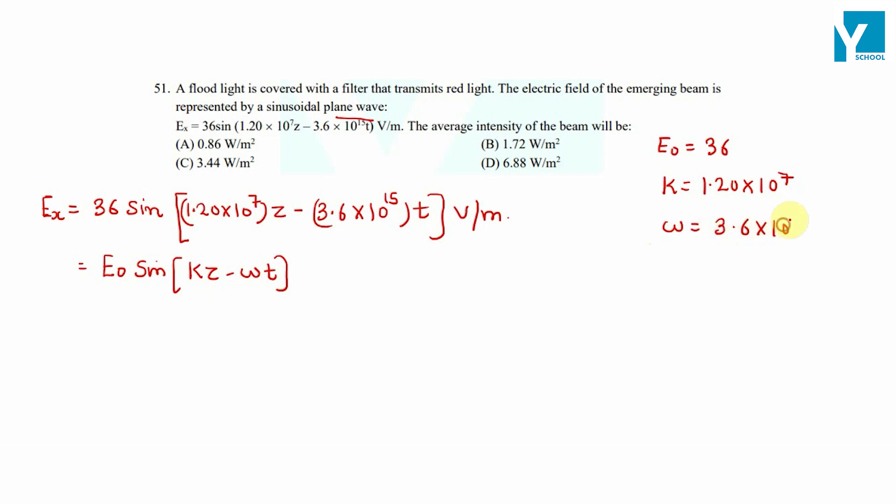The average intensity of the beam is - we know average intensity I_average equals 1/2 ε₀ E₀² times c, which is the speed of electromagnetic waves.